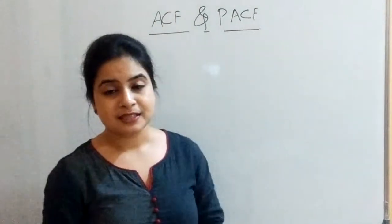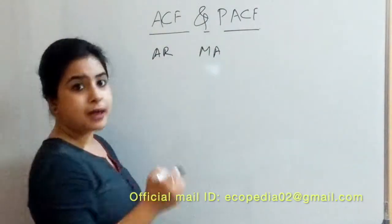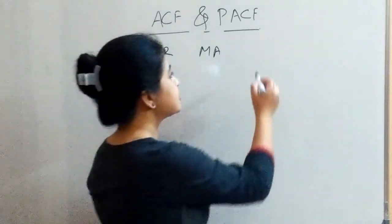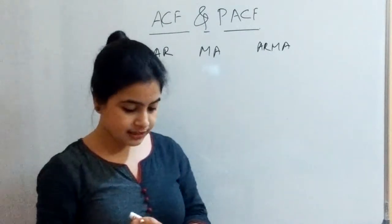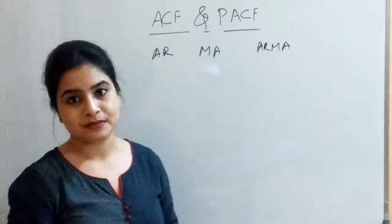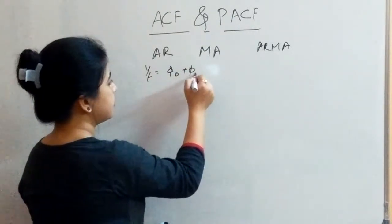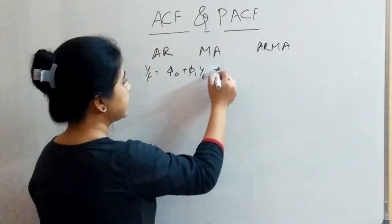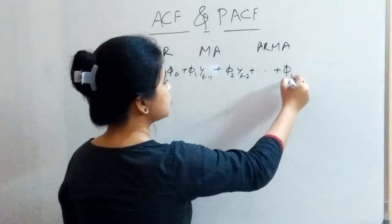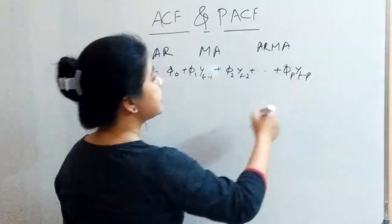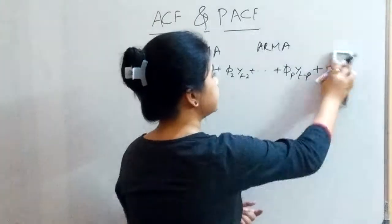In time series we have AR, MA moving average functions, and ARMA, that is autoregressive moving average process. Writing the general form we have phi-naught, phi-1 yt-minus-1, phi-2 yt-minus-2, and so on, let's say phi-p yt-minus-p plus epsilon-t.